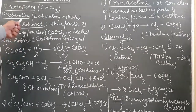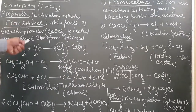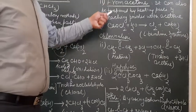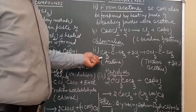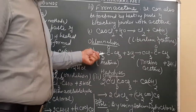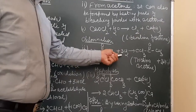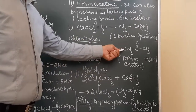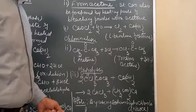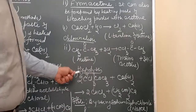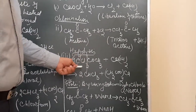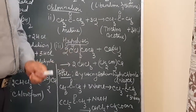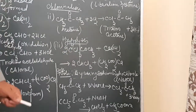So the two methods for preparation of chloroform are: one, from ethanol treated with bleaching powder; and two, from acetone treated with bleaching powder. In the acetone method, chlorine acts as a chlorinating agent to form trichloroacetone, which is then hydrolyzed with calcium hydroxide to give chloroform.